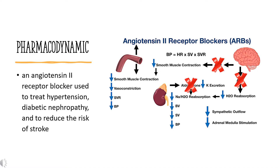Pharmacodynamics. Candesartan cilexetil is an ARB prodrug that is rapidly converted to Candesartan, its active metabolite, during absorption from the gastrointestinal tract. Candesartan confers blood pressure-lowering effects by antagonizing the hypertensive effects of angiotensin II via the RAAS. RAAS is a homeostatic mechanism for regulating hemodynamics, water, and electrolyte balance.